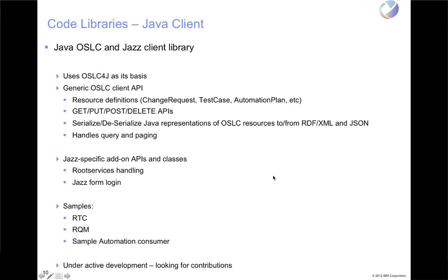It does use OSLC4J as its basis. There's a generic OSLC client API. There are resource definitions out there in Java for things like change requests, test cases, automation plans, and different types of OSLC resources — so you don't have to go write a Java object to represent those things yourself. And you can certainly extend the ones we've put out there to represent something like a Bugzilla bug or a Rational Team Concert work item, including additional attributes that aren't in the base OSLC resource.